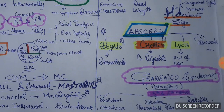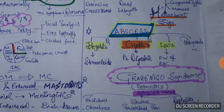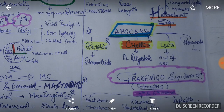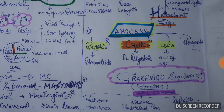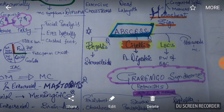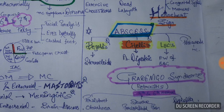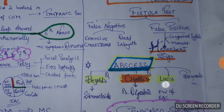Different named abscesses are important for NEET PG: Bezold's abscess, Citelli's abscess, and Luc's abscess. Bezold's abscess arises as a complication of COM from the mastoid tip and tracks to the anterior part of the sternocleidomastoid. Citelli's abscess is related to the posterior belly of the digastric. Luc's abscess is a subperiosteal abscess related to the posterior wall of the external auditory canal, and is the most commonly encountered abscess.